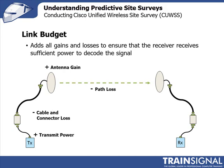Then I propagate out over the air and I'm going to lose signal strength depending on the environment. I might be losing it simply because I'm going through the air, or I may be going through walls and other obstructions, but I'm going to have some path loss. Then my signal arrives at the receiving antenna and I have antenna gain there as well. And if I'm using an external antenna at the receiver, I'm also going to have loss as my signal goes down that cable, and any connectors will also introduce loss.